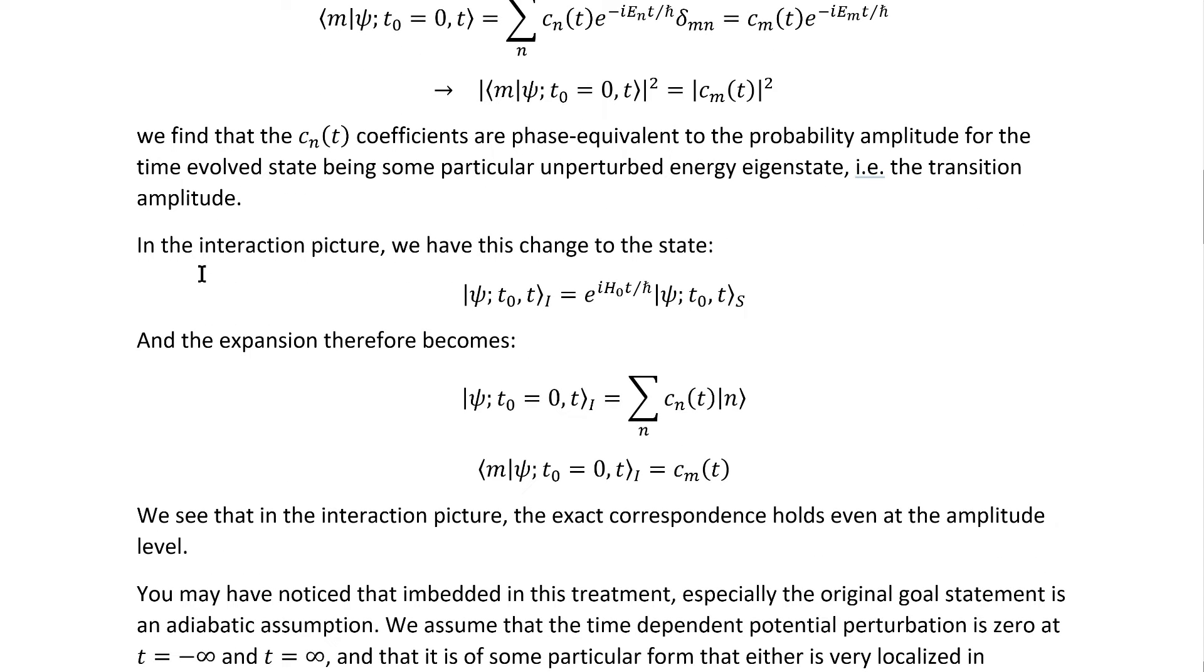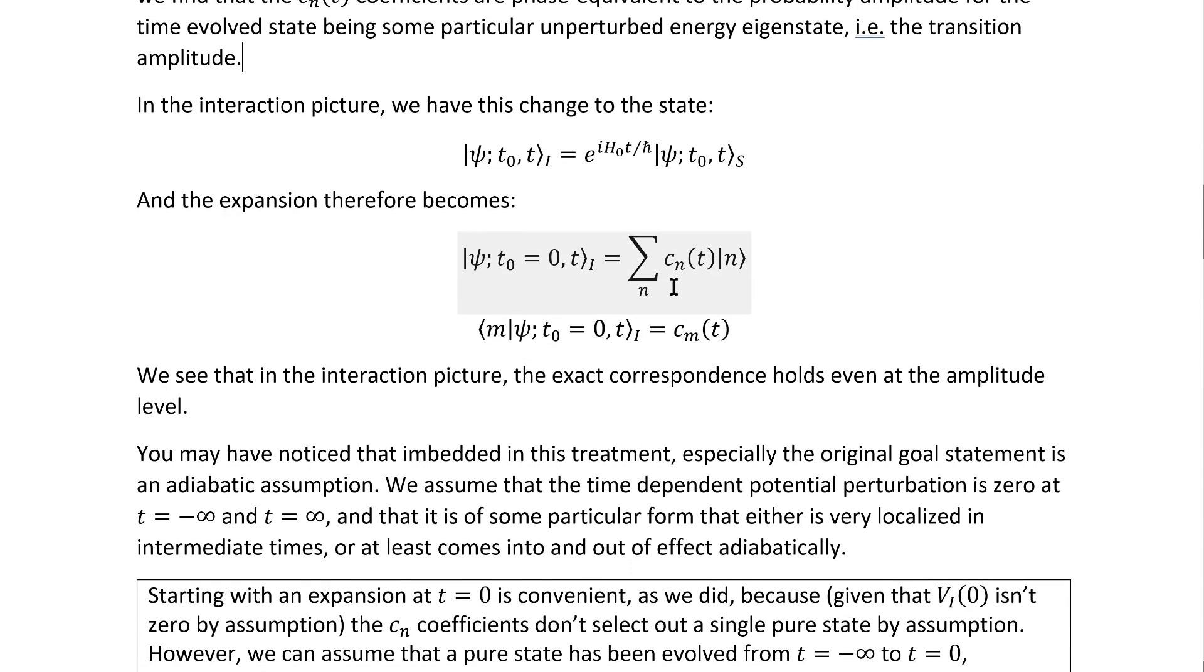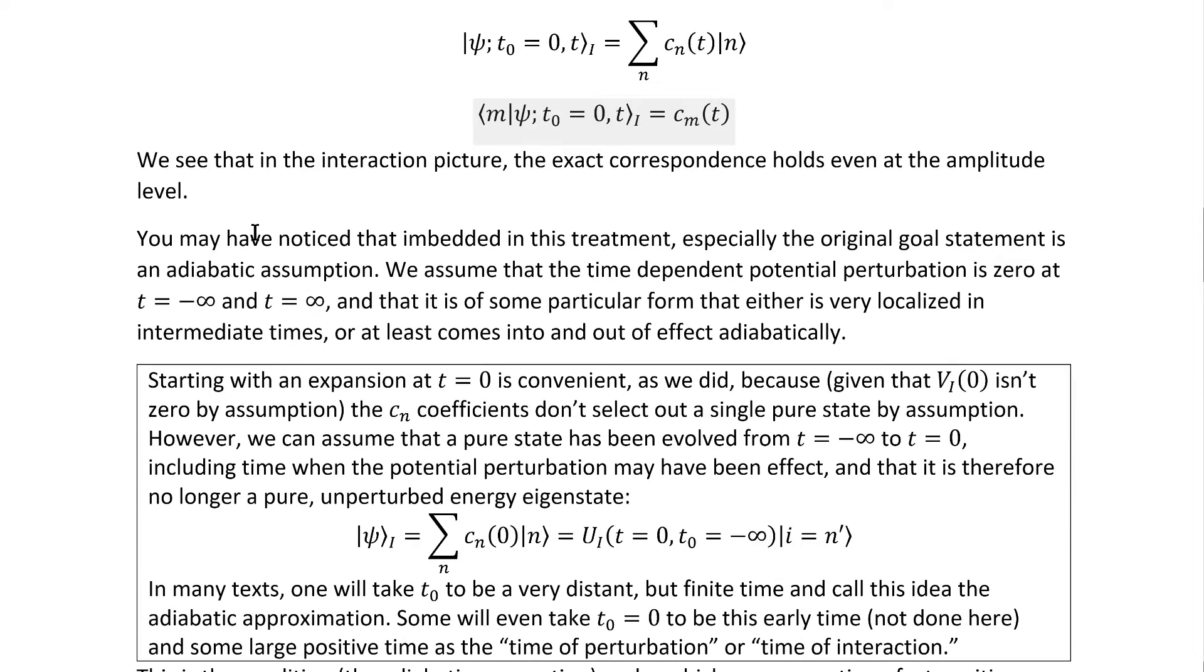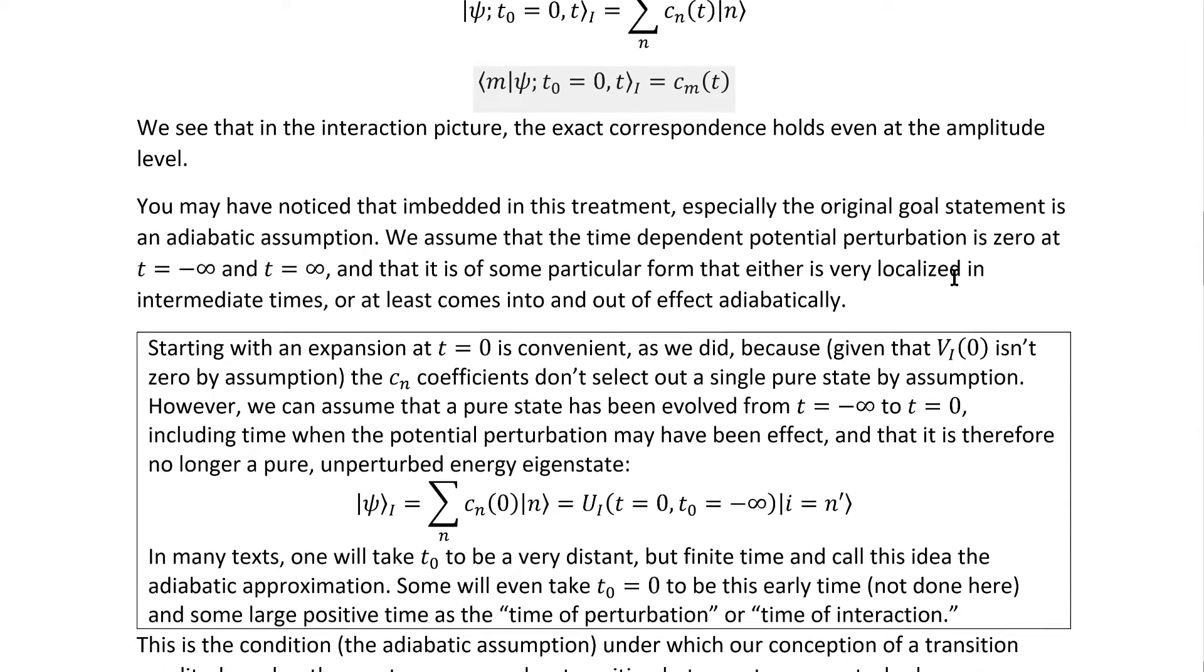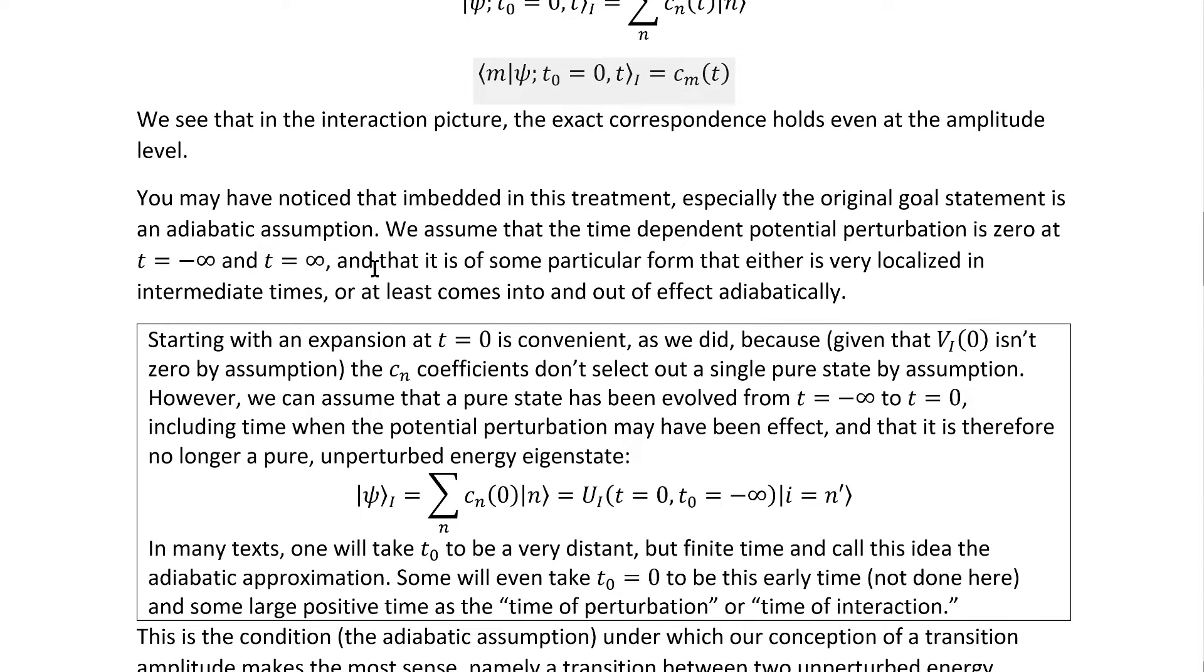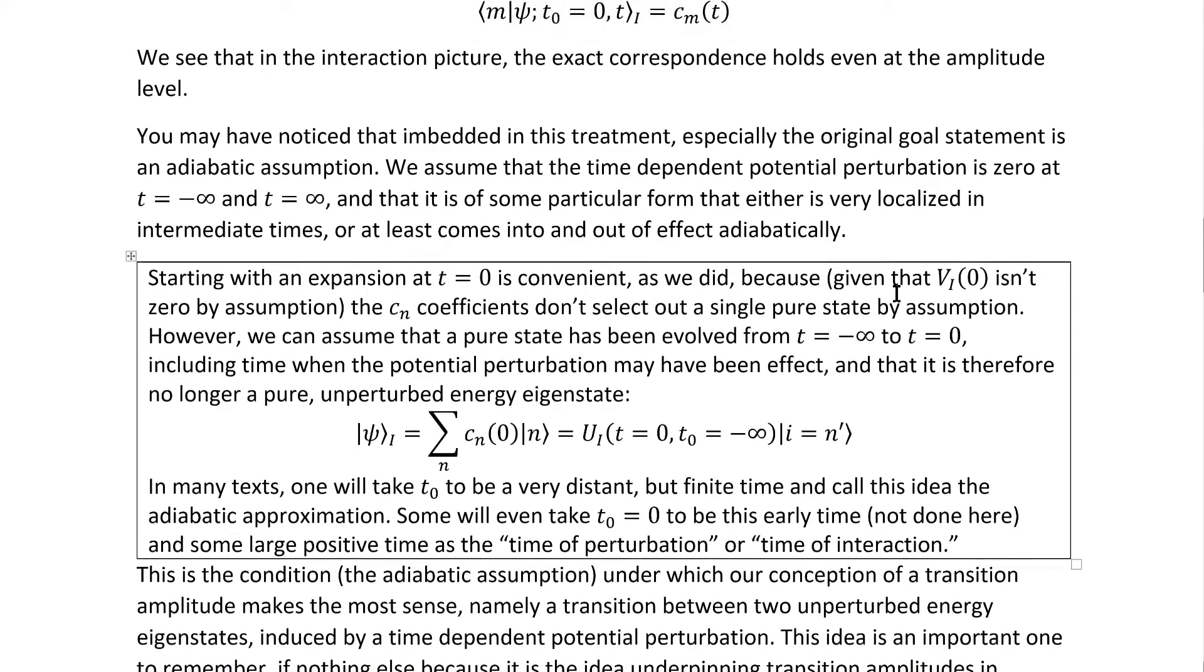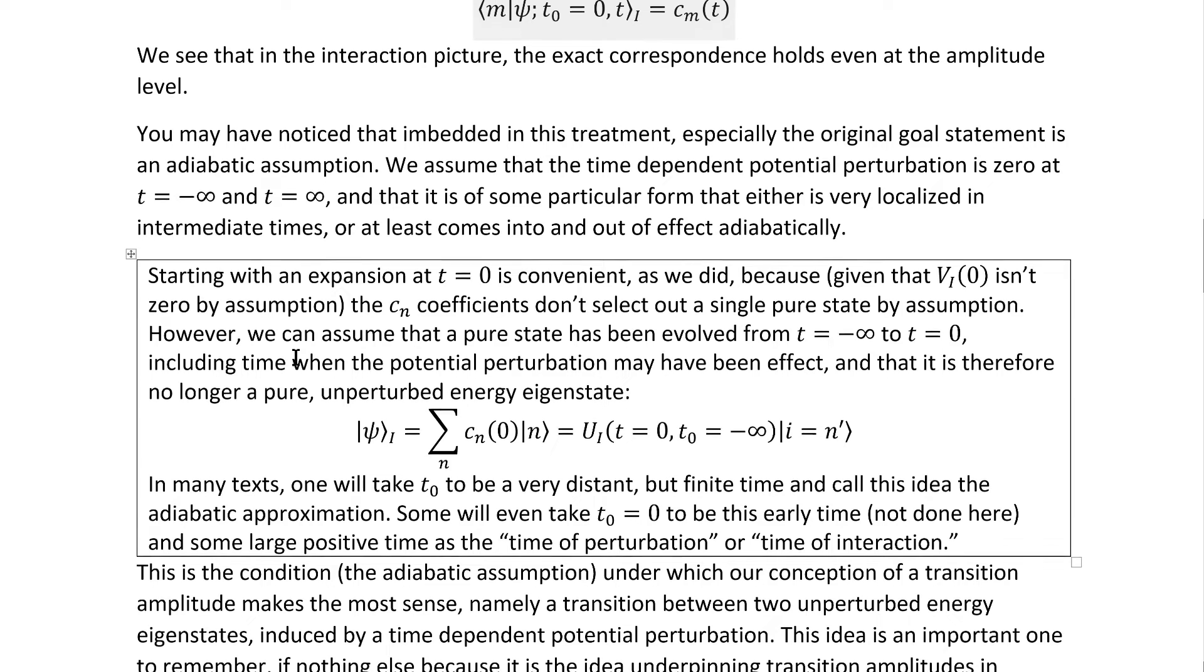In the interaction picture, we have this change to the state, and the expansion therefore reduces to this. We see that in the interaction picture, the exact correspondence holds even at the amplitude level. You may have noticed that embedded in this treatment, especially the original goal statement, is an adiabatic assumption. We assume that the time-dependent potential perturbation is zero at T equals negative infinity and T equals positive infinity, and that it is of some particular form that either is very localized in intermediate times, or at least comes into and out of effect adiabatically.